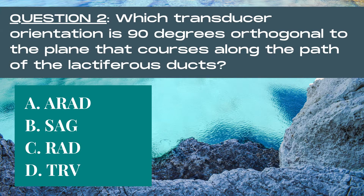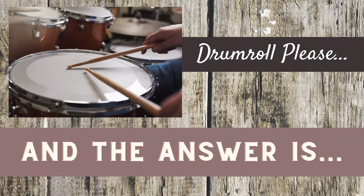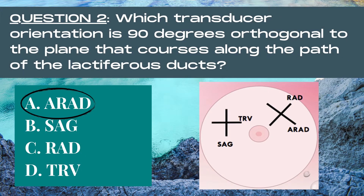Question 2. Which transducer orientation is 90 degrees orthogonal to the plane that courses along the path of the lactiferous ducts? A antiradial, B sagittal, C radial, or D transverse? The answer is A, antiradial or ARAD for short. Antiradial is 90 degrees orthogonal to the radial plane, and the radial plane in breast imaging follows the path of the lactiferous ducts.